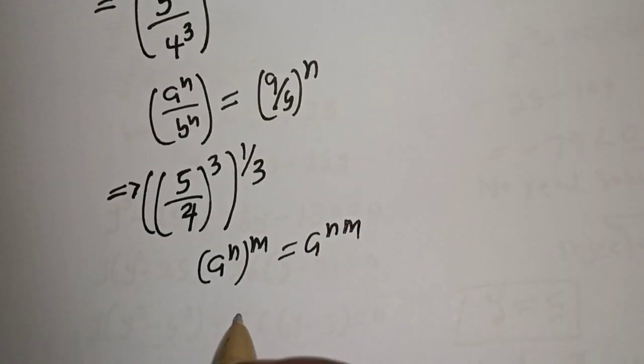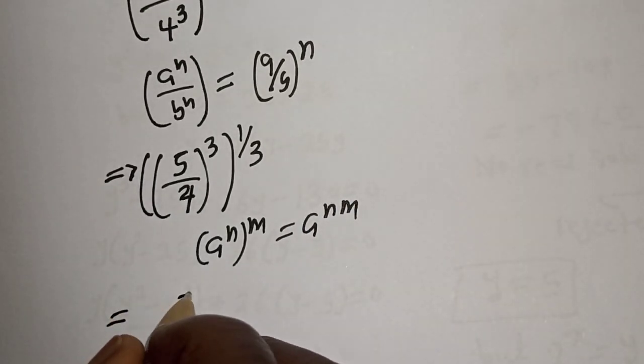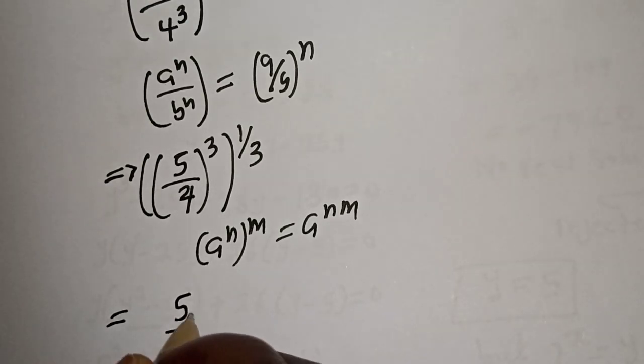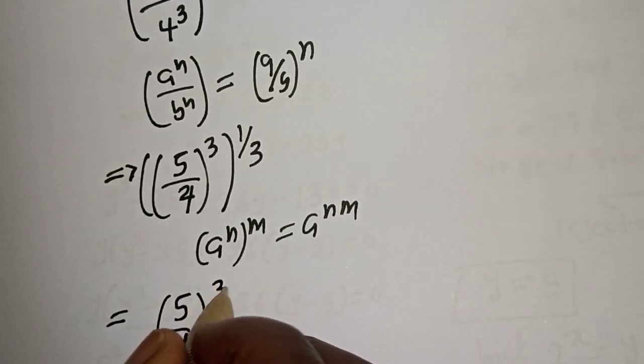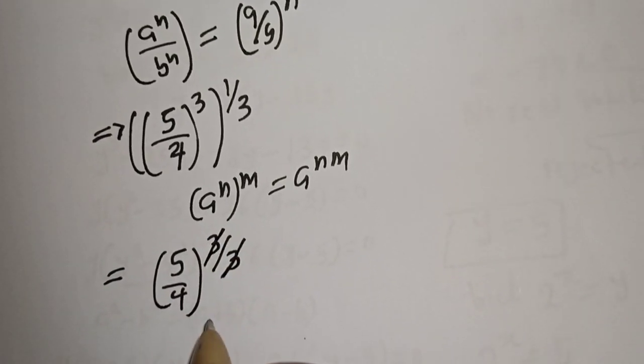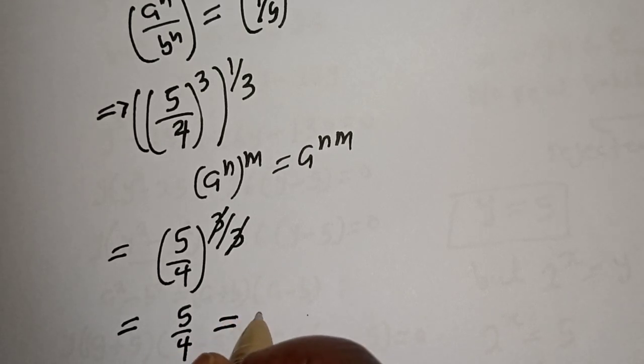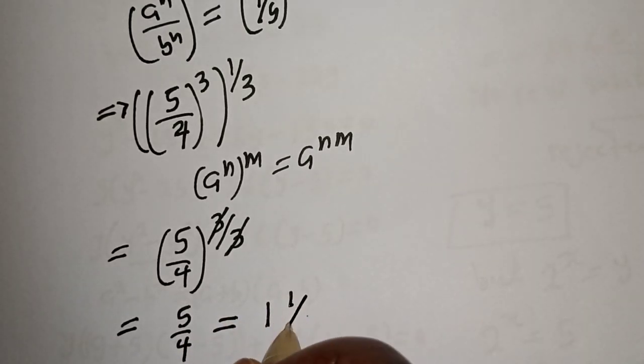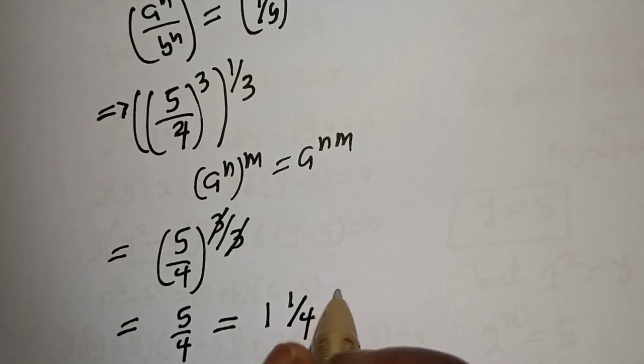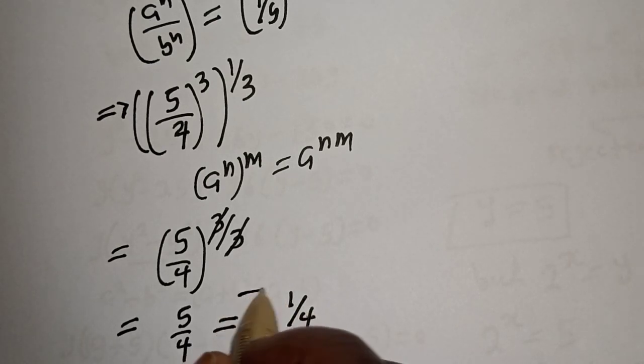And this is equal to 5 over 4 raised to power 3 over 3. This will cancel. This is equal to 5 over 4, which is equal to 1 and 1/4, and this is the final answer.